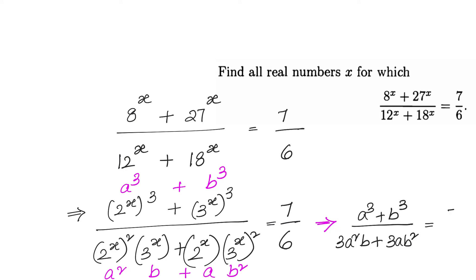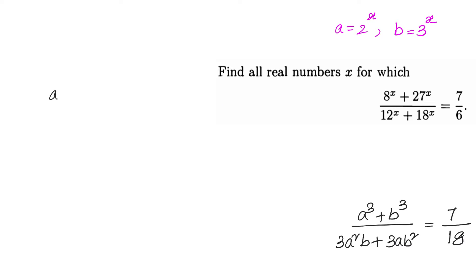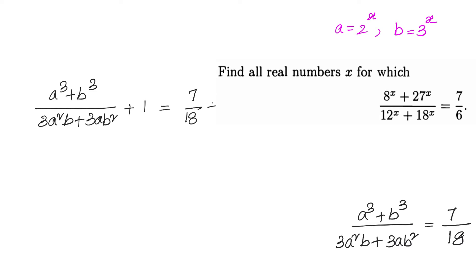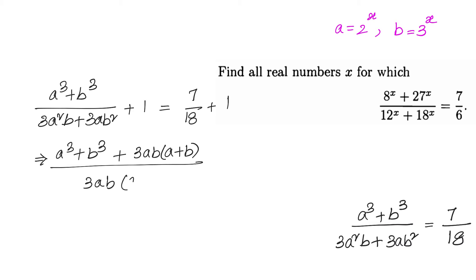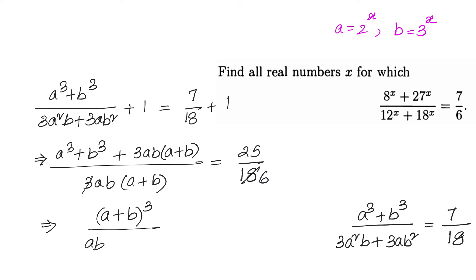Adding 1 to both sides: (a³ + b³)/(3a²b + 3ab²) + 1 = 7/18 + 1. The left side becomes (a³ + b³ + 3ab(a+b)) / (3ab(a+b)), which is (a+b)³ / (3ab(a+b)). The right side gives 25/18. So we have (a+b)³ / (3ab(a+b)) = 25/18.